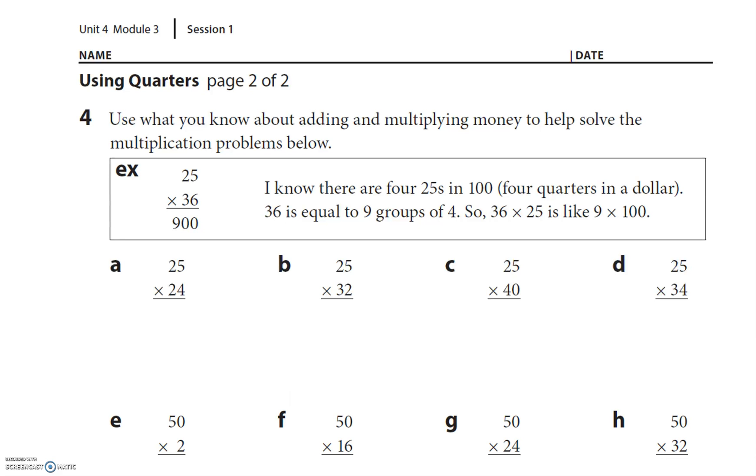I'm going kind of fast. Make sure you try these. In fact, you should probably pause it and try these right now. Use what you know about adding and multiplying money to help solve the multiplication problems below. They explain there are four 25s in 100, four quarters in a dollar, and 36 equals nine groups of four, so that is nine hundred pennies.